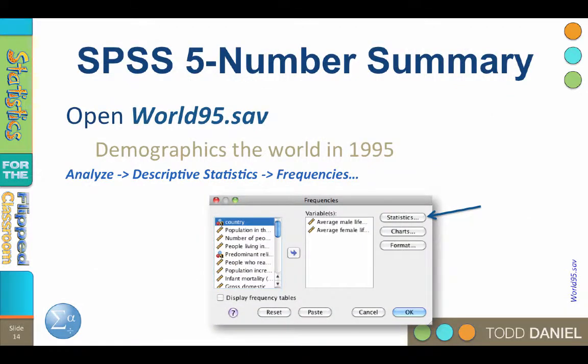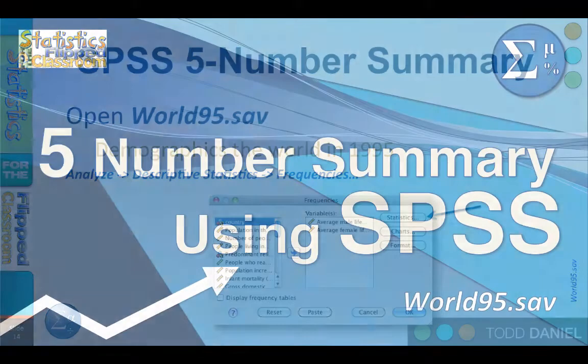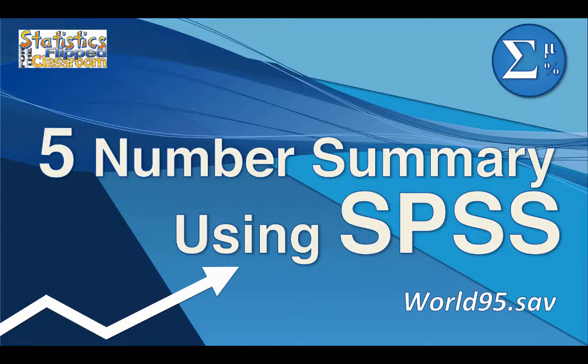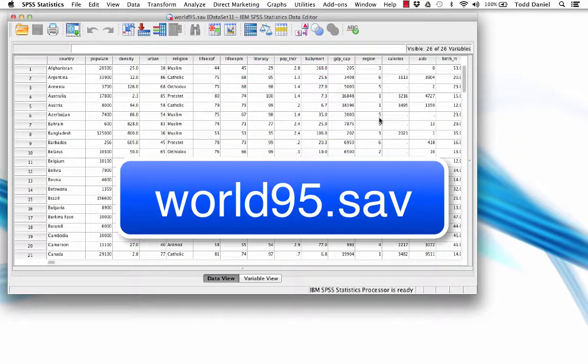Using the data set world95.sav, we will now create the five number summary and a box plot using SPSS. The data set world95.sav is demographic data from around the world from the year 1995.